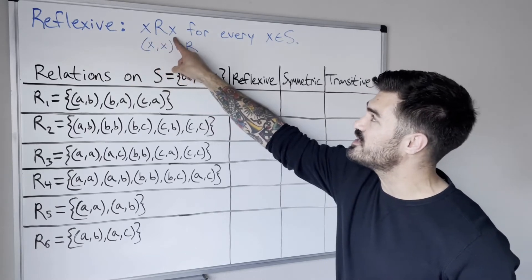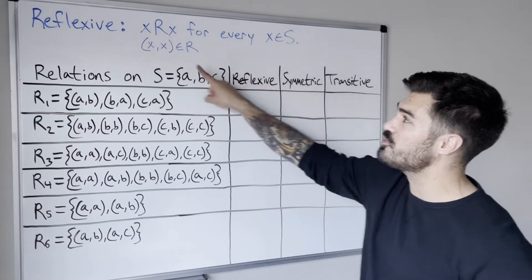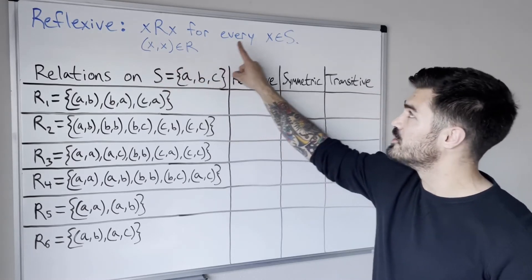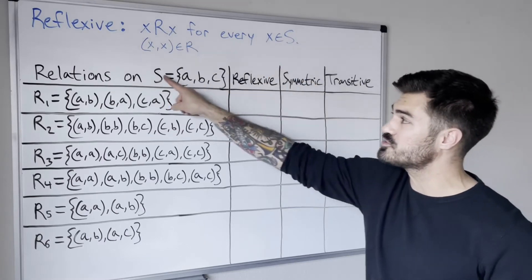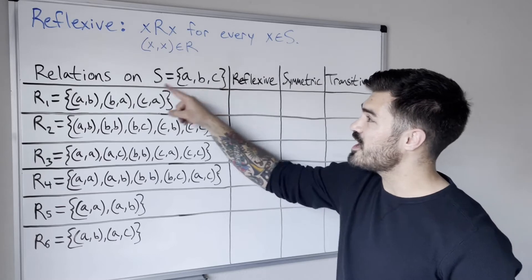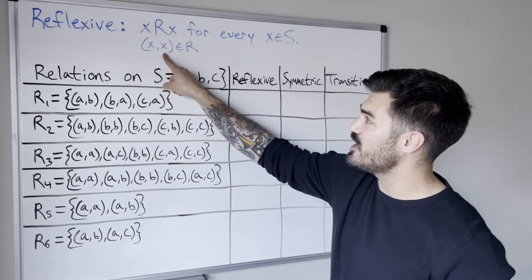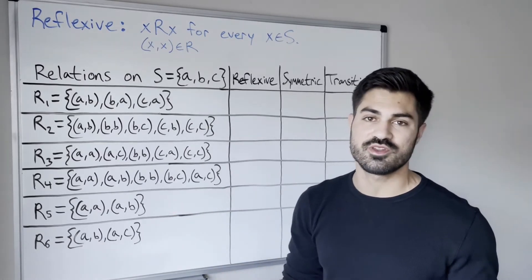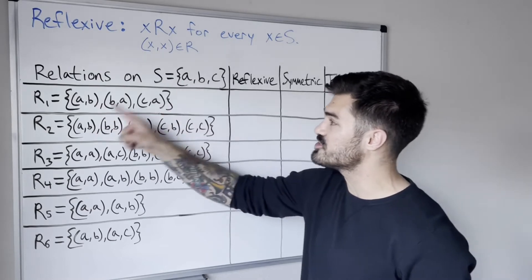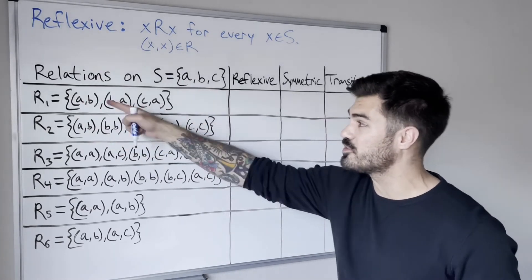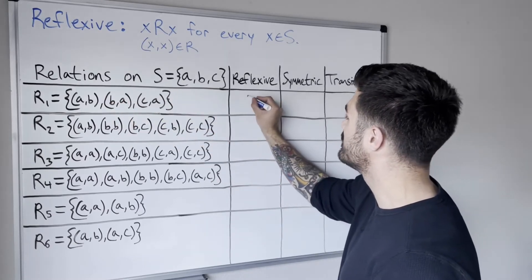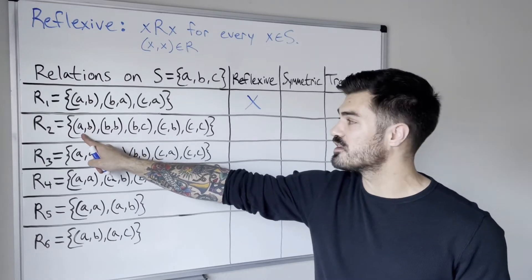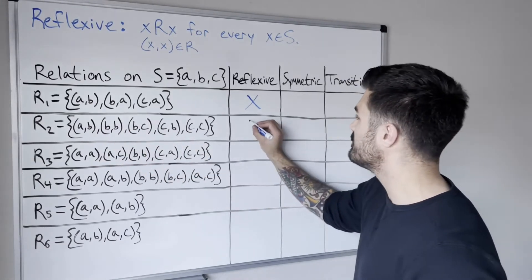Remember, reflexive means that X is related to X for every X in S, or equivalently that the ordered pair (X, X) is in the relation. Since S = {A, B, C}, a relation must contain (A,A), (B,B), and (C,C) to be reflexive. Looking at relation one: there is no (A,A) — so it's not reflexive. In fact, none of (A,A), (B,B), (C,C) are there. For relation two: we don't have (A,A), so not reflexive — even though (B,B) and (C,C) are there, we need all three. Relation three has (A,A), (B,B), and (C,C), so it is reflexive.